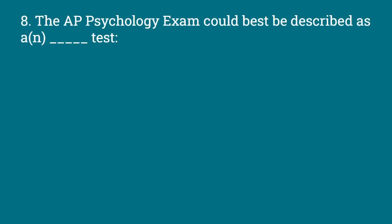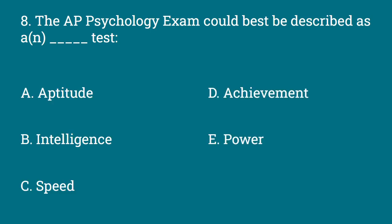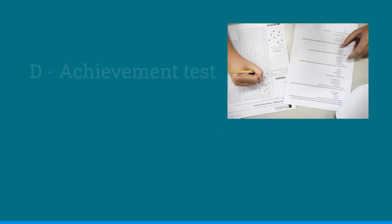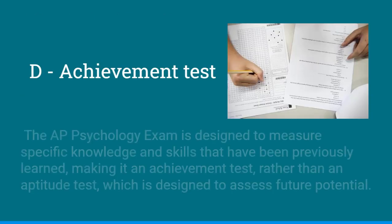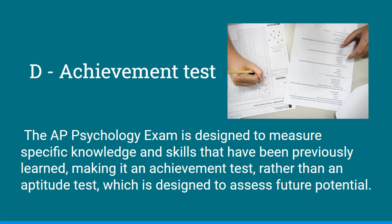The AP Psychology exam could best be described as a blank test — with options: Aptitude, Intelligence, Speed, Achievement, or Power. The answer is D, an Achievement test. The AP Psychology exam is designed to measure specific knowledge and skills that have been previously learned, making it an achievement test rather than an aptitude test, which is designed to assess future potential.